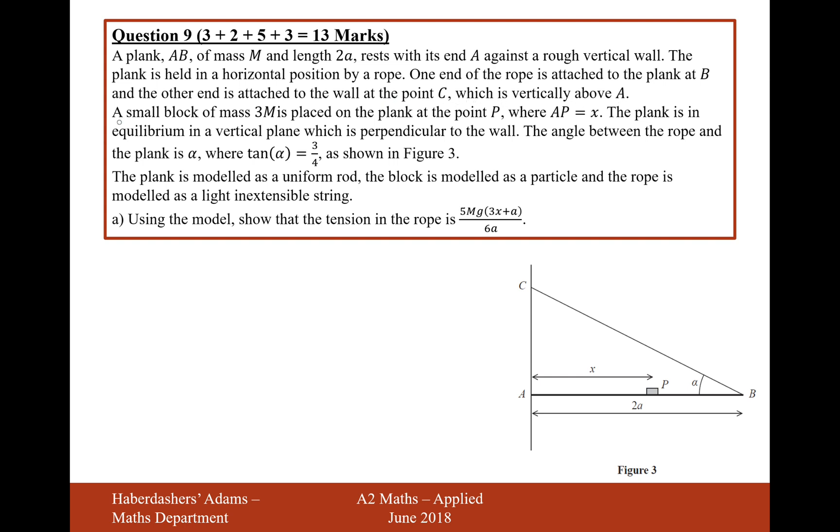which is vertically above A. A small block of mass 3M is placed on the plank at the point P, where AP is equal to x. The plank is in equilibrium and in a vertical plane which is perpendicular to the wall. The angle between the rope and the plank is alpha, where tan of alpha is 3 over 4 as shown in figure 3.